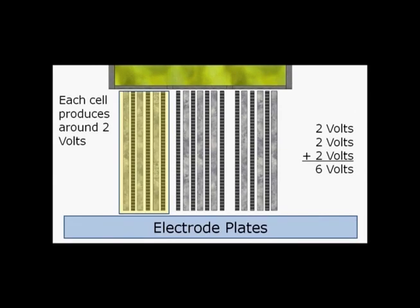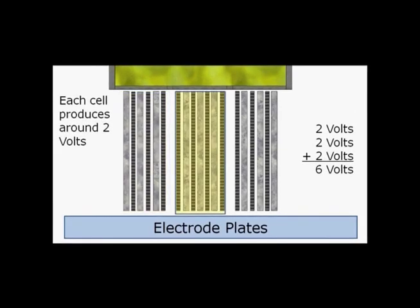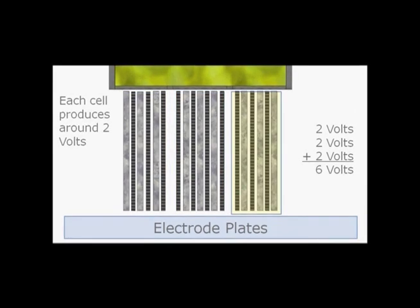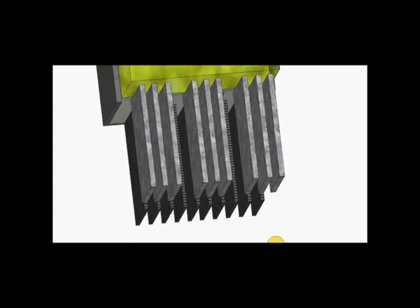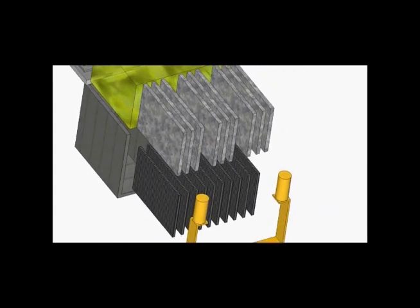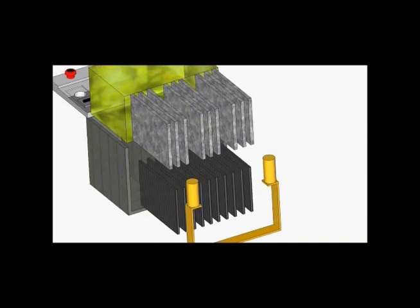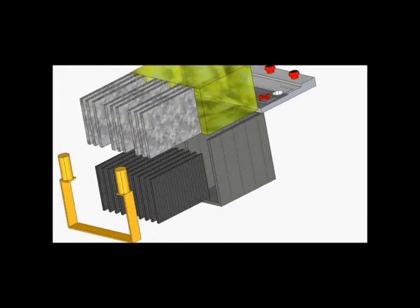Each cell consists of multiple electrode plates and produces around 2 volts when charged. This battery contains three cells, producing a total voltage of around 6 volts across the two terminals.